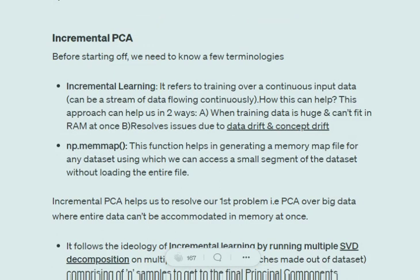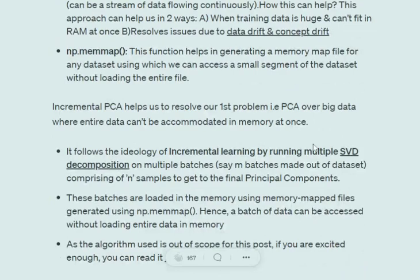This can help us in two ways: one is when the dataset is huge and can't fit in your computer system, and also it can help in resolving problems due to data drift and concept drift — you can look those up in my previous videos. There is a function called numpy's memmap (memory map) that helps us generate a memory map for any dataset, so that whenever we need a small segment we don't need to load the whole file — we just fetch that particular portion. A memory map is essentially a mapping of a small chunk of data into memory.